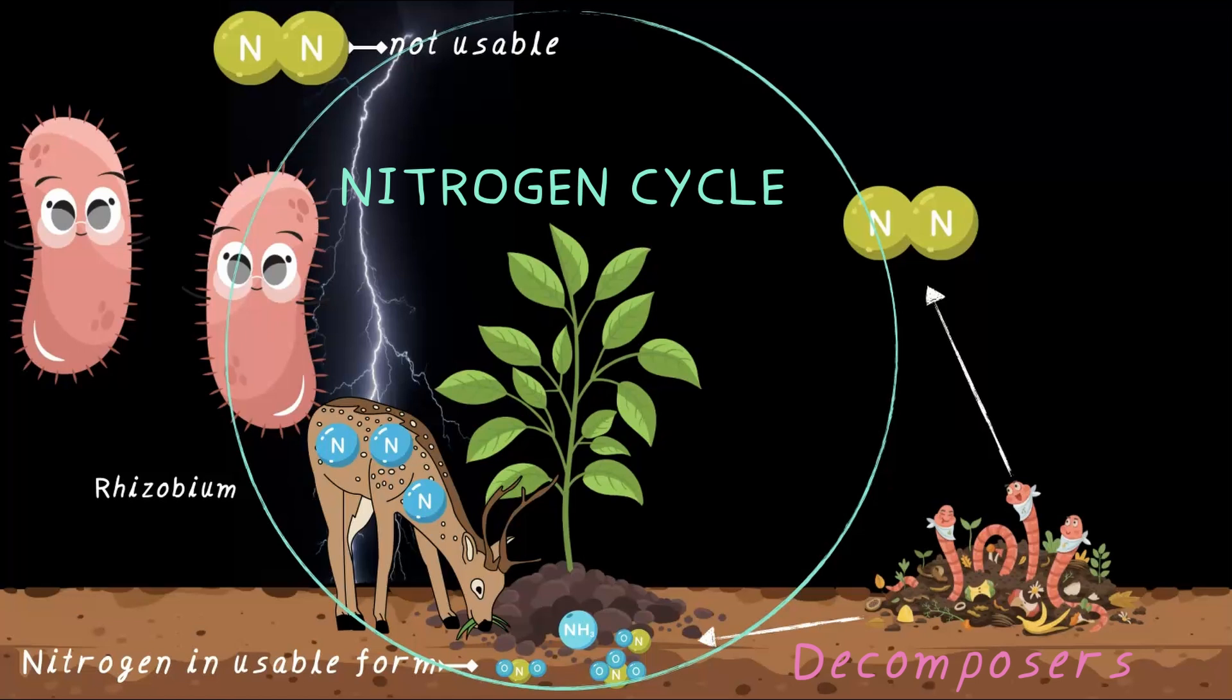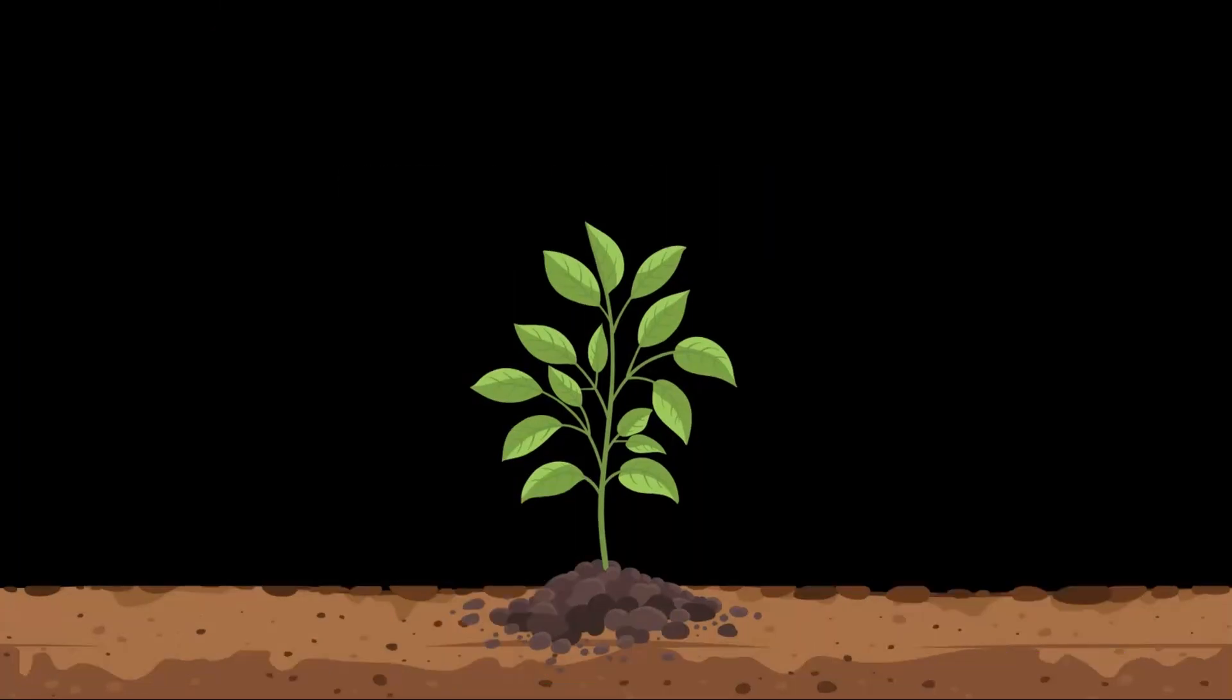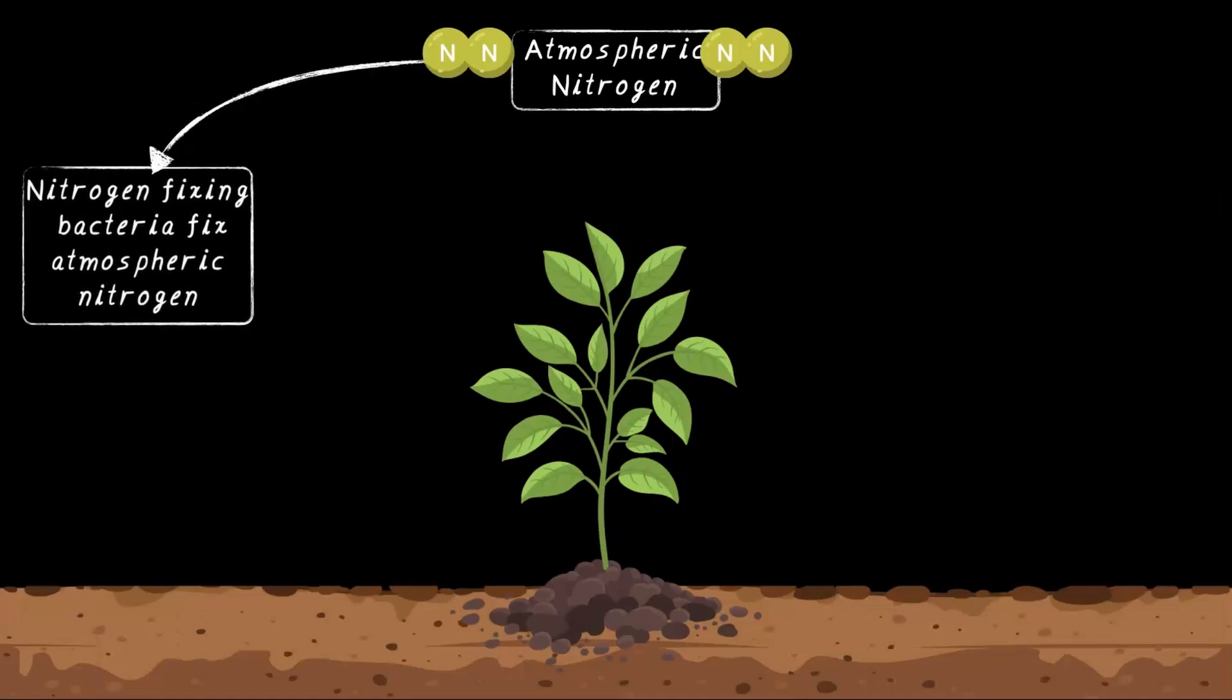Let's talk about the journey of nitrogen: how it moves from air to plants to animals and back to air again. We've got tons of nitrogen in the atmosphere, but as we already know, plants can't use it directly. That's where our little nitrogen-fixing superheroes come in.